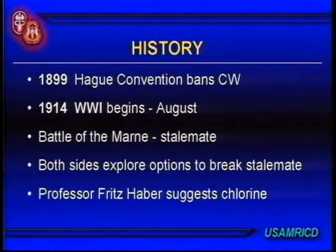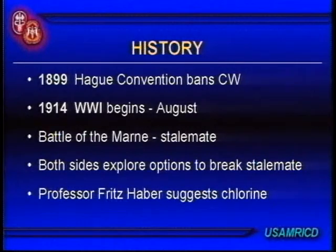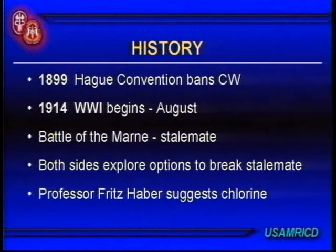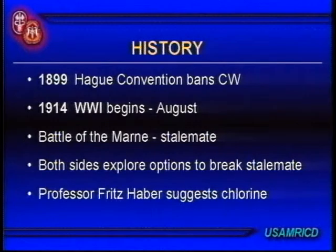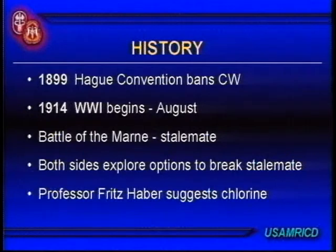In 1899, the major nations of the world got together at an international peace convention and decided to ban chemical warfare agents. Unfortunately, about 15 years later, all that went up in smoke. When the First World War started, the Germans swept across the lowlands and Belgium, but were stopped by the Allies at the Battle of the Marne. From then on, stalemate ensued — trench warfare. Both sides frantically looked for some way to achieve the initiative and break the stalemate.